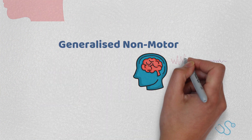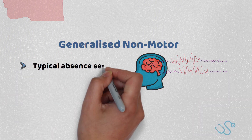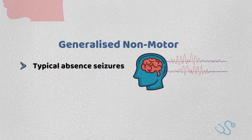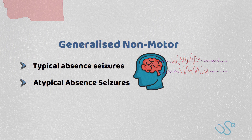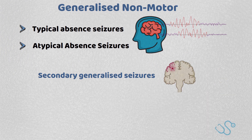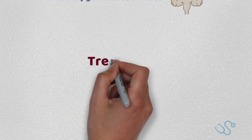Generalized non-motor seizures include typical absence seizures, which involve a brief period of around 10 seconds of interrupted consciousness where the person is often staring into space, or atypical absence seizures, which also happen briefly but often have minor movements such as blinking or chewing. You can also get secondary generalized seizures, in which part of the seizure starts as a focal seizure on one side of the brain and then moves to a generalized seizure by spreading its foci to both sides of the brain.